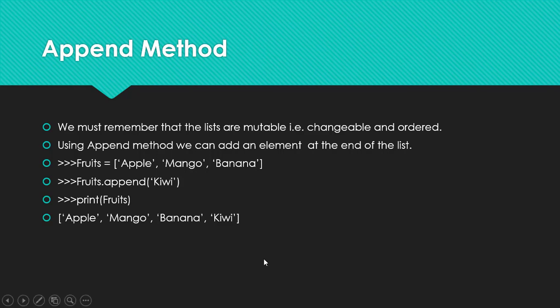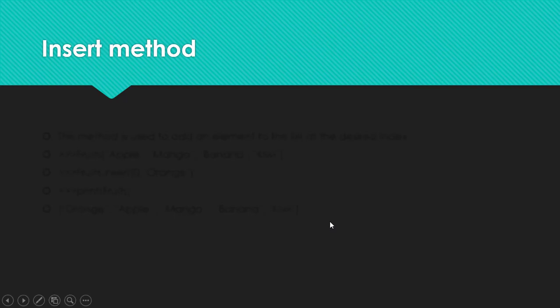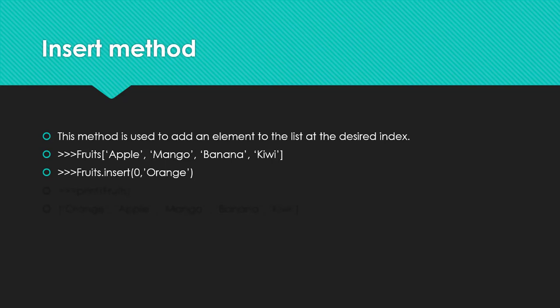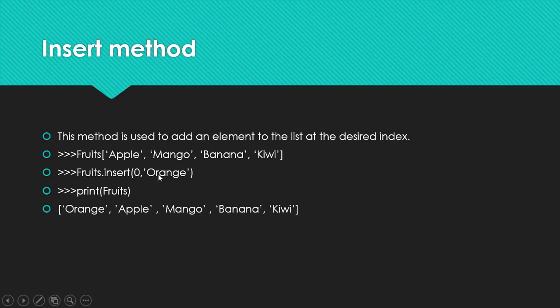The next method is the insert method, used to add an element at a desired index. The append method added the element to the last index, but if we need to add it at a specific index of our choice, we use insert. The syntax is fruits.insert(index, value). For example, inserting orange at index 0 gives us orange, apple, mango, banana, kiwi — all other elements are pushed back by one index.